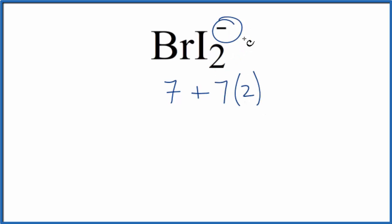And this negative sign means we have an extra electron. Let's add that in too. 7 plus 14, 21 plus 1 is 22 total valence electrons for the BrI2- Lewis structure.